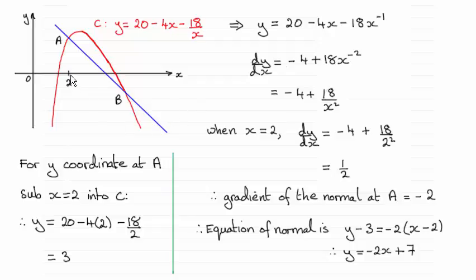So I've already got one of the x coordinates at A. I need the y coordinate at A and I can get that just by substituting x equals 2 into the equation here for C. So I've done that and y turns out to be 3. So we've got the x and y coordinates now at A.